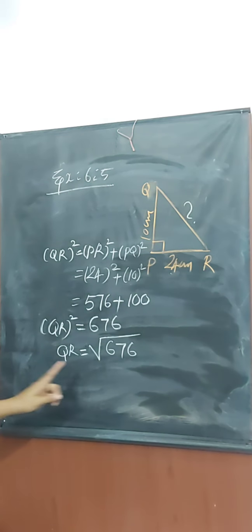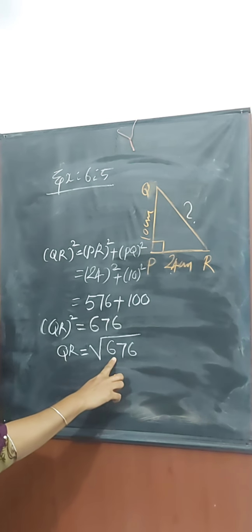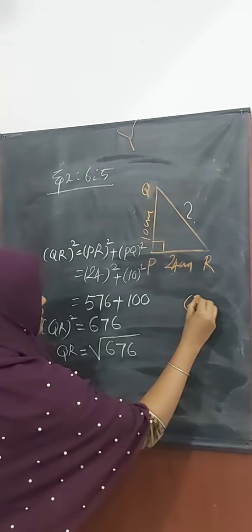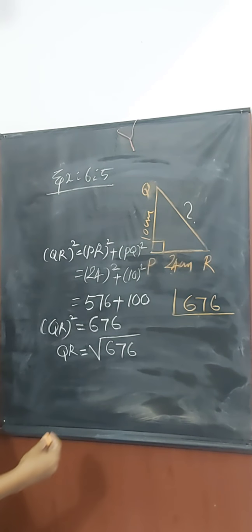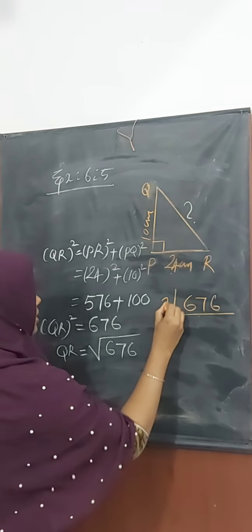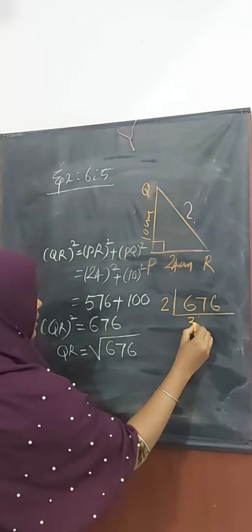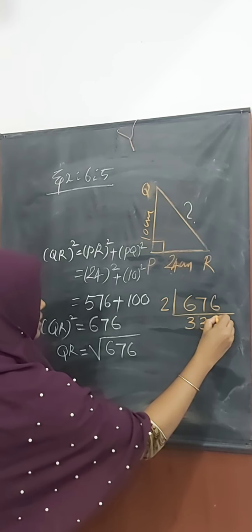How to find the root of 676? Find the LCM of 676. This is the easy way of calculating roots. This is an even number. We take 2, we take 2, 3, 3, 16, we get 8.